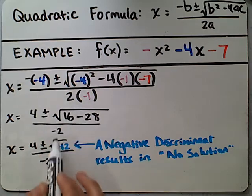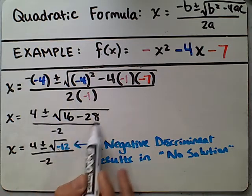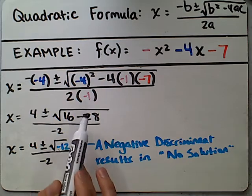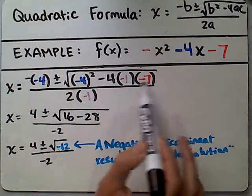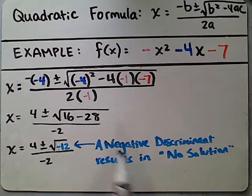Down here we've got 2 times negative 1. That's negative 2. So we simplify and we get this. The most challenging part of this question, in my opinion, is multiplying these three negative numbers, so definitely take your time on that step.